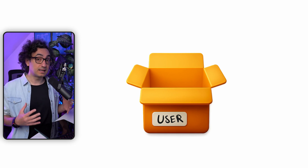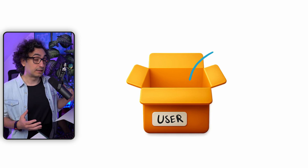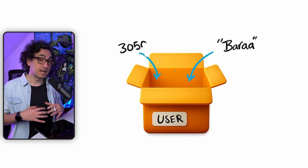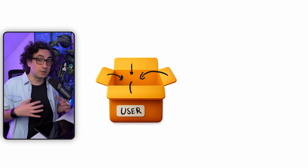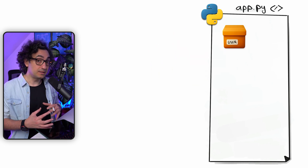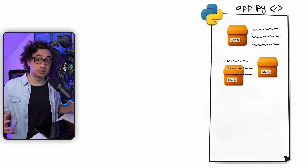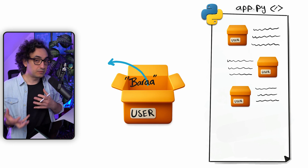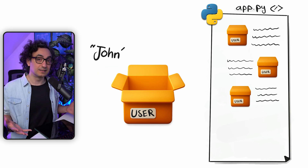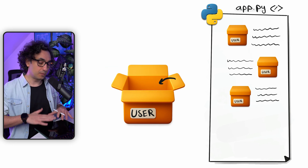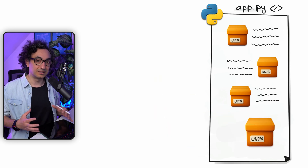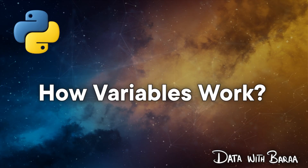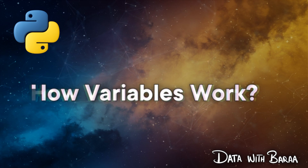You can put stuff inside this box — anything you want, like a number, a string, maybe a logic or calculations. Once you have stuff inside this box, you can move this box everywhere in your code and use its contents wherever you want. And anytime you want, you can open the box, take everything out, put new stuff inside it, close it, and start using it around your code. That's what we mean with variables.